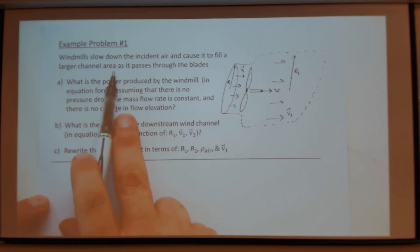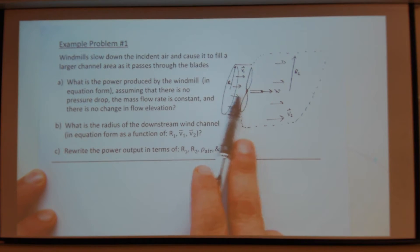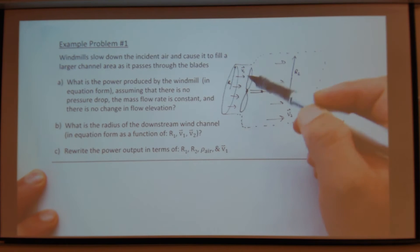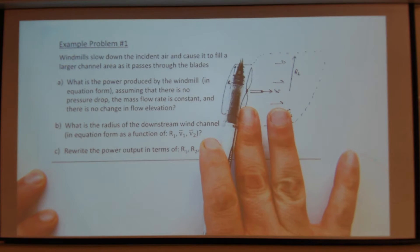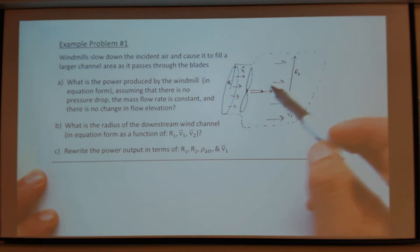So there's a windmill, okay? It slows down the incident air. So I have some cross-sectional area of my windmill, air comes in, turns the blades, the air after is at actually a slower velocity.